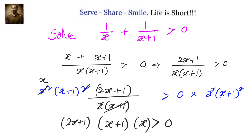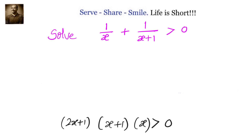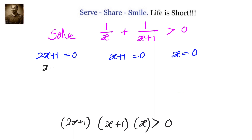Now based on this, let us find the critical points — the points when the function becomes equal to 0. Setting each factor to zero: 2x+1 = 0 gives x = -1/2; x+1 = 0 gives x = -1; and x = 0.